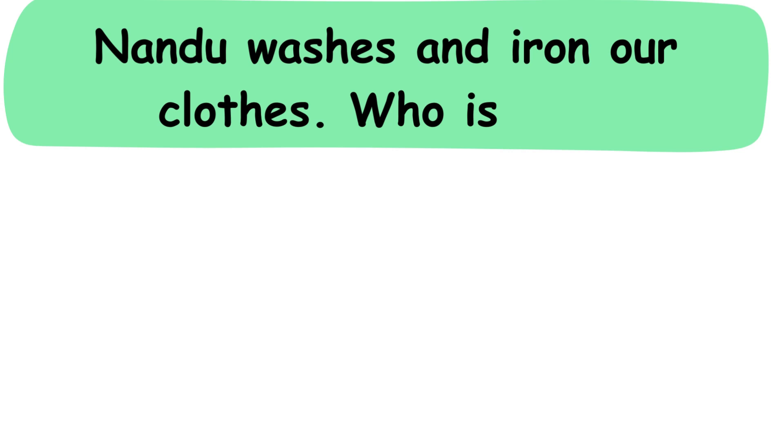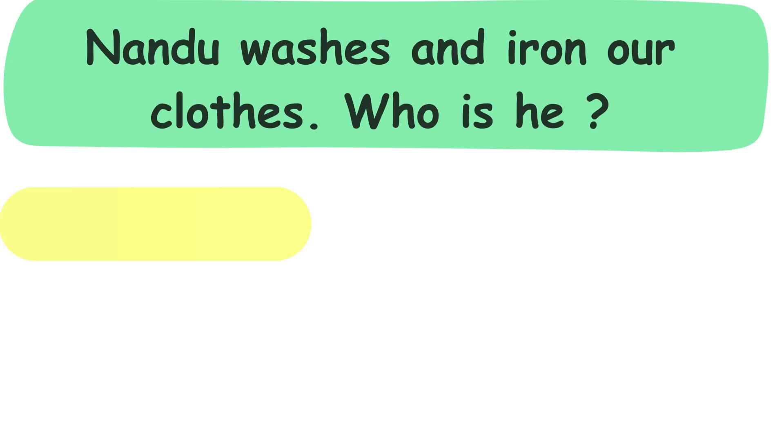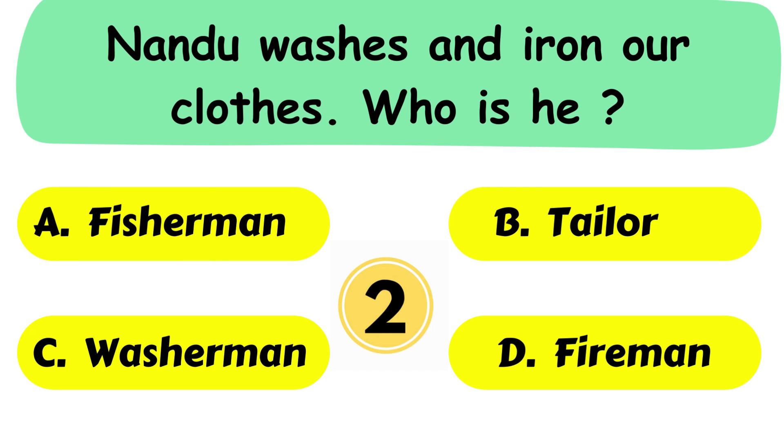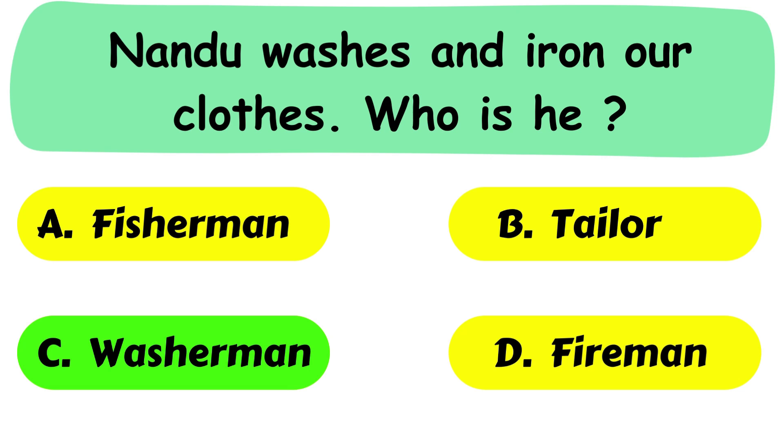Question No. 6. Nandu washes and iron our clothes. Who is he? A. Fisherman. B. Tailor. C. Washerman or D. Fireman. The correct answer is option C. Washerman.